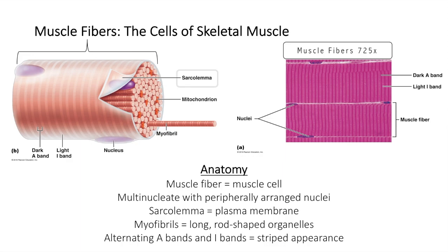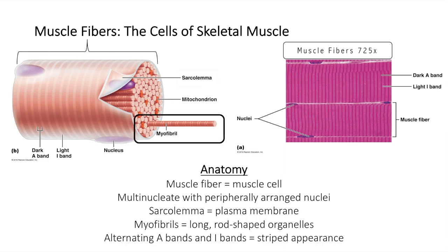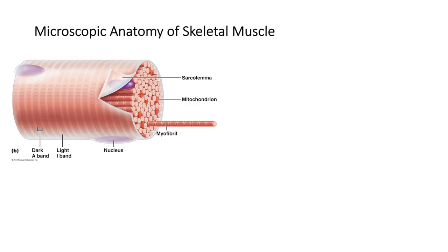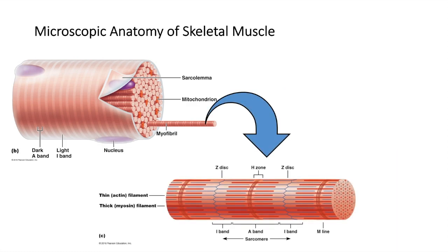The plasma membrane is called the sarcolemma in these cells. The nuclei are pushed peripherally by the longitudinally arranged myofibrils — long, rod-shaped organelles that nearly fill the sarcoplasm, the cytoplasm of the muscle cell. Alternating light and dark bands along the length of the myofibrils give the muscle fiber its striped appearance. Myofibrils are made up of even smaller, thread-like structures called myofilaments.